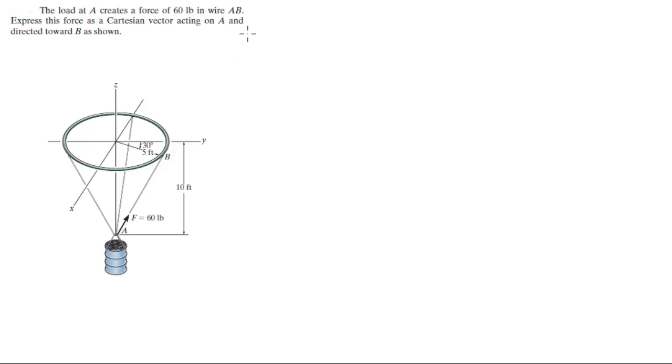So first let's find the position vectors. A is equal to 0i plus 0j minus 10k.